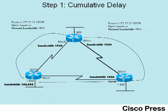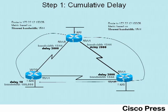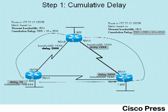EIGRP uses both interface bandwidth and interface delay as part of its metric calculation. The delay, instead of being the slowest or constraining delay, is the cumulative delay for all outgoing interfaces in a route. Looking at the figure, we overlay the delay settings on each outgoing interface on the two competing routes — these are the default delay settings. The R1-to-R2 route has a cumulative delay of 2010, while the other route has a cumulative delay of 2000 plus 2000 plus 10, or 4010. So we can predict that R1 will pick the left-hand path, because the bandwidth ties but the cumulative delay is smaller over the direct route.